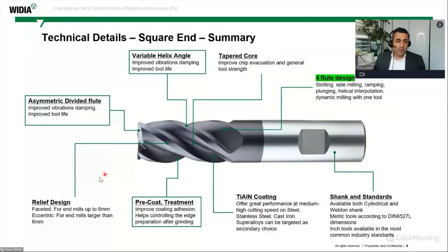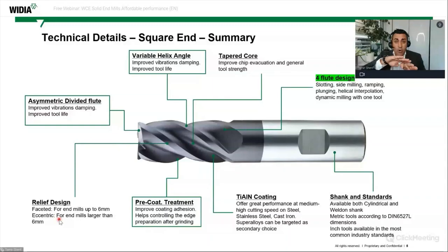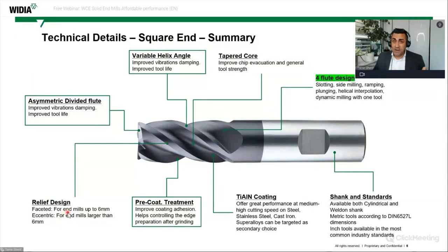The last point is the relief design. We have two types: faceted and eccentric relief. The relief is the design after the cutting edge — faceted is curved or flat, each with its advantages. Faceted relief is used for end mills up to six millimeters, and eccentric relief for end mills larger than six millimeters.